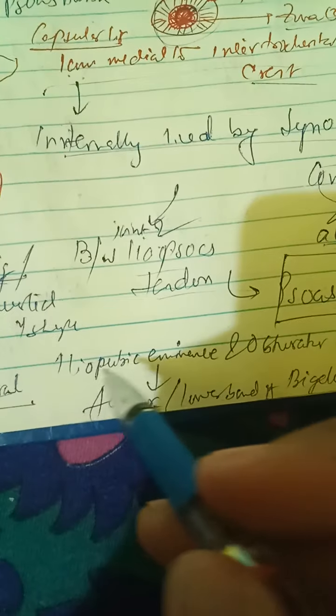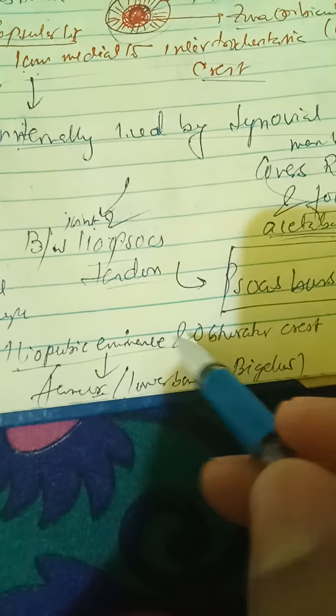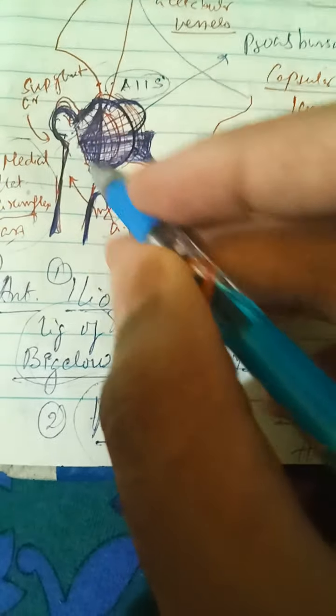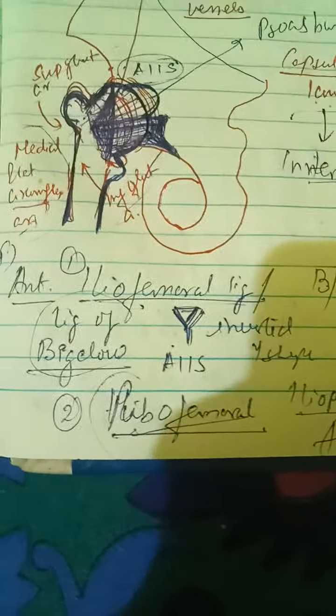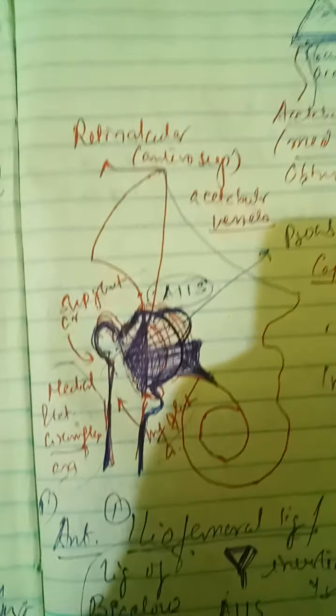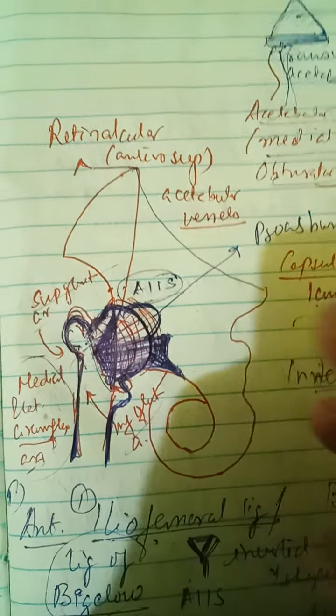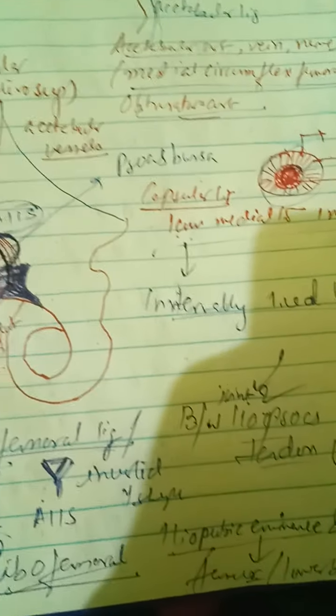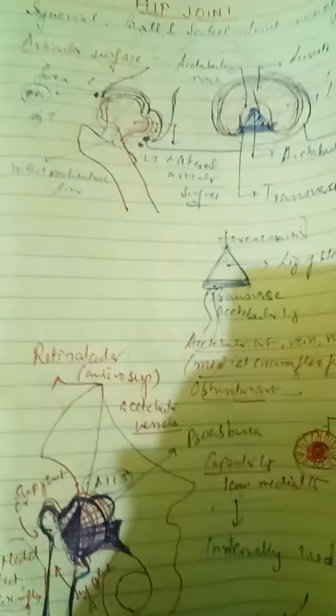There is also the pubofemoral ligament, which originates from the iliopubic eminence or the obturator crest and attaches to the lower border of the ligament of Bigelow at the intertrochanteric line. Posteriorly there is the ischiofemoral ligament, which runs from the ischium to the greater trochanter, providing posterior support to the hip joint.